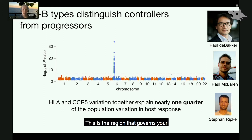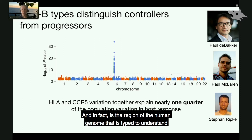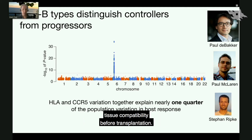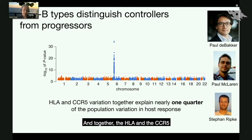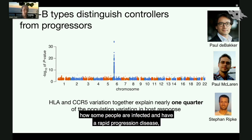This is the region that governs your immune system's response to invaders of all kinds, and in fact it's the region of the human genome that is typed to understand tissue compatibility before transplantation. Together, the HLA and the CCR5 variation explain nearly one quarter of the population variation — how some people are infected and have a rapid progression to disease, and why others were not infected even though they had the same risk.